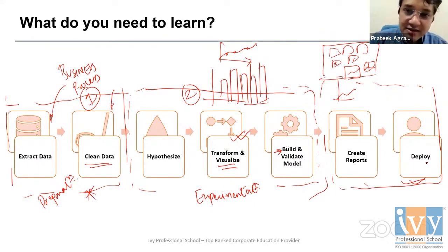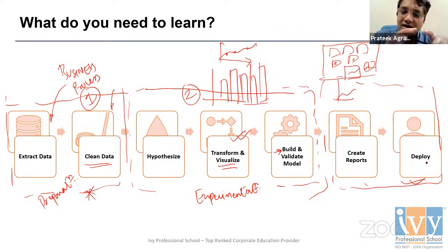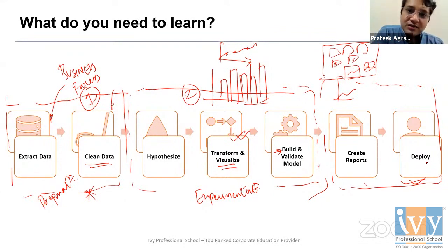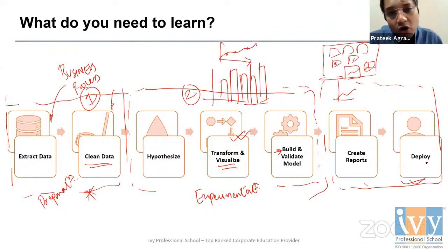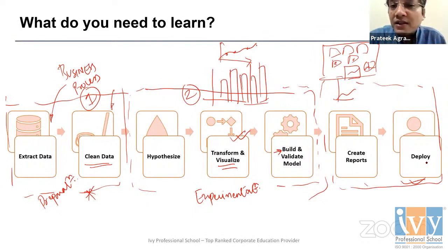The floor is now open for questions. The diploma in data science program covers everything from data extraction and management, to experimentation and statistical machine learning algorithms, to deployment. Anyone wanting to become a full-stack data scientist may want to explore that program.